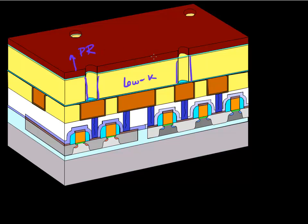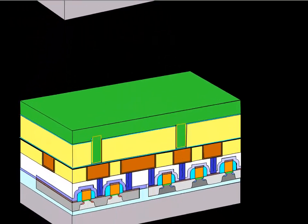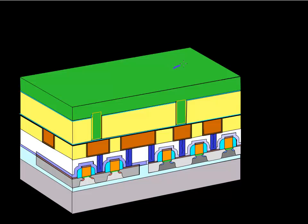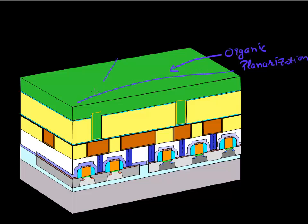And then we fill this with organic planarization layer. So there's an organic planarization layer which is spin coated on top of your top of this pattern. And it essentially achieves planarization, it achieves a planar surface on which we can do further lithography. So now this surface is planar. We coat it again with a photoresist.